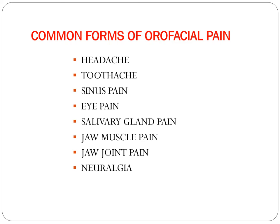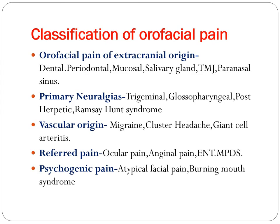Orofacial pain is classified into: pain of extracranial origin — dental, periodontal, mucosal, salivary gland, TMJ, paranasal sinus; primary neuralgias such as trigeminal neuralgia, postherpetic neuralgia, and Ramsay Hunt syndrome; vascular pain including cluster headache and migraine; and psychogenic pain. Psychogenic pain is the last category used only when no other type can be identified.